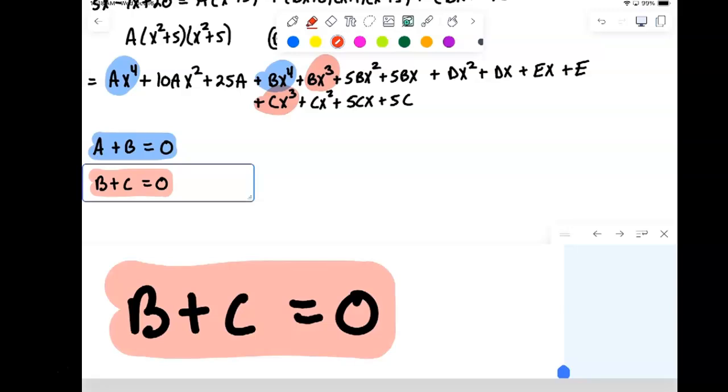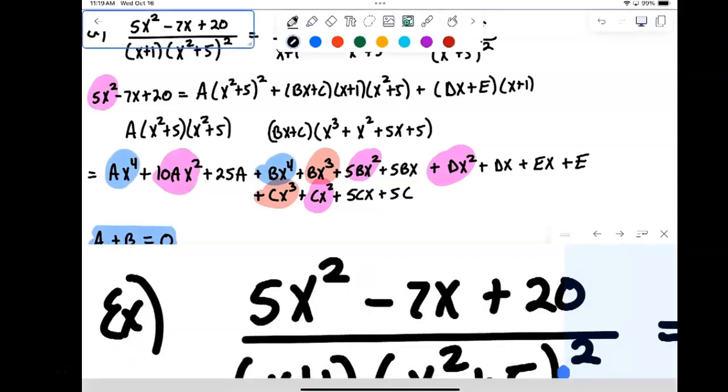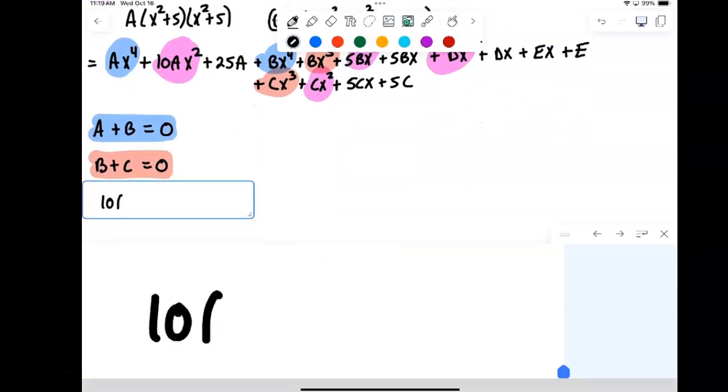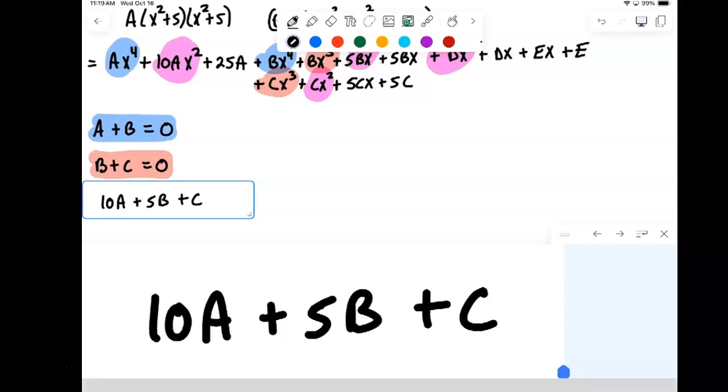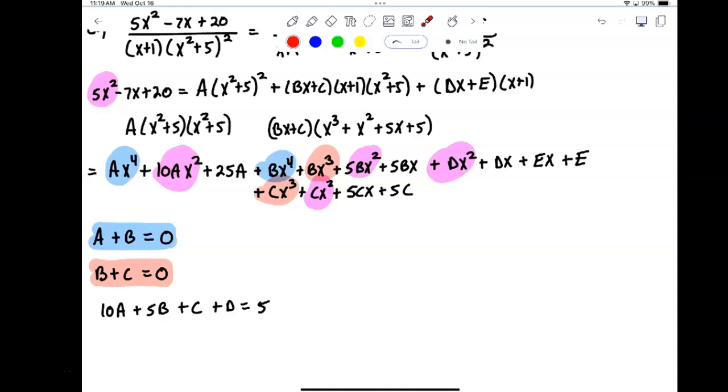And notice there is no x to the third in the original equation either. So that means we'll have this equation: b plus c has to be zero. And we keep going. Up next will be the x squared variables. So I'm getting out my highlighter here. I have a 5x squared, I have a 10ax squared, a 5bx squared, I have a cx squared, and I have a dx squared. Putting all of those together, I'll have 10a plus 5b plus c plus d. All of that has to be equal to the 5 from the original expression there. So that's my third equation.